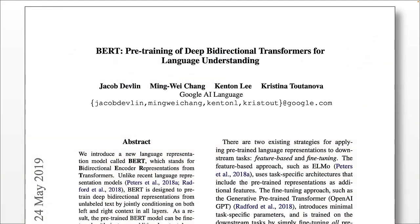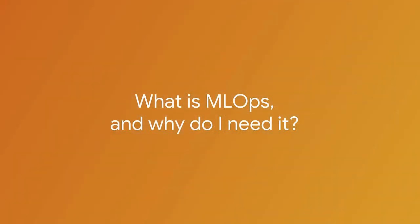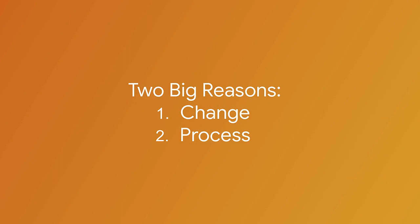When you're working in a research environment and you finish whatever research you're working on and you publish a paper, you're done and that's great. But when you're working in production ML, really that's just the beginning of things. You've trained your first model and what you end up needing after that is ML Ops. So let's look at why we need it. There are two big reasons: change and process.